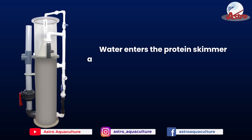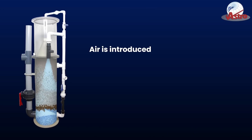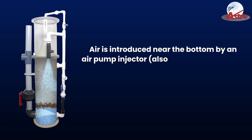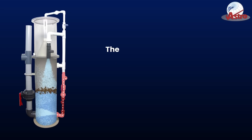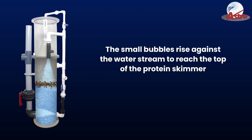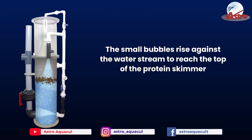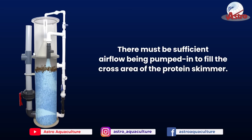Water enters the protein skimmer at the top and flows down to the bottom. Air is introduced near the bottom by an air pump injector, also known as a venturi, and this produces small bubbles. The small bubbles rise against the water stream to reach the top of the protein skimmer.